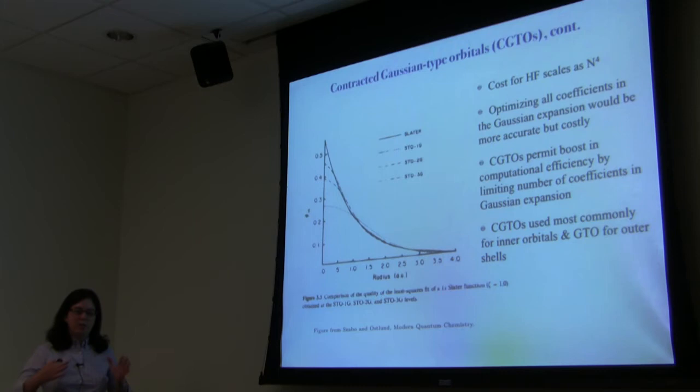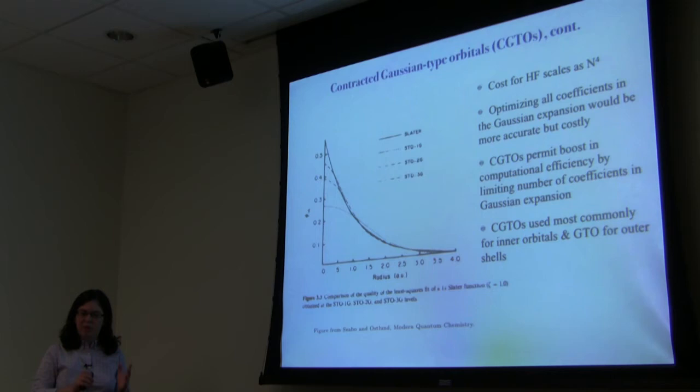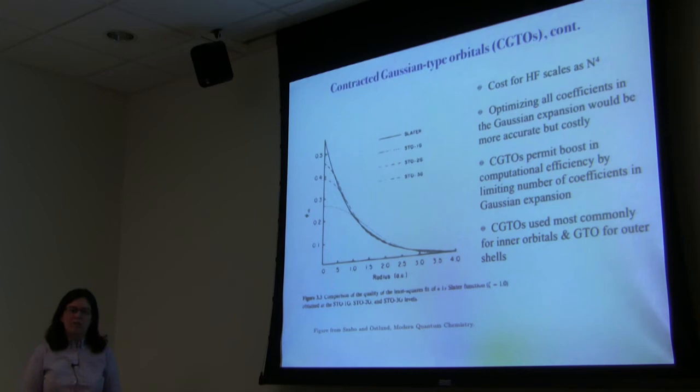It often happens that contracted Gaussians are used for core-type orbitals, because you can pretty much predict what they're going to look like and it's not so important that they change in response to the chemical environment. So you have contracted orbitals for the inner shells and individual Gaussians for the outer shells.